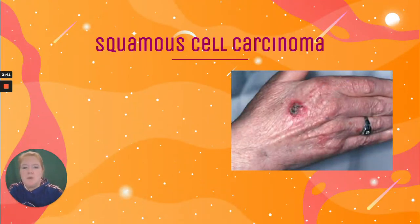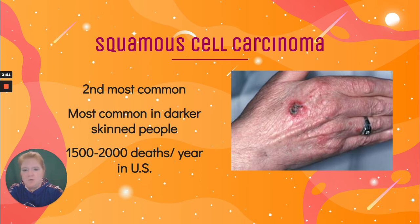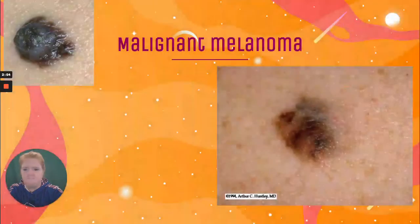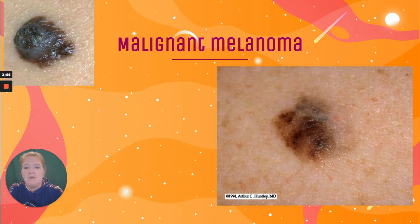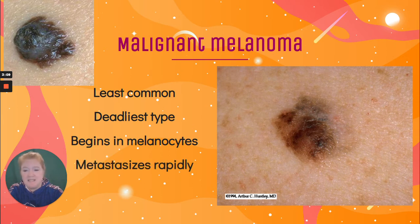Then there's squamous cell carcinoma, the second most common type of skin cancer. It's more common in darker-skinned people and results in about 1,500 to 2,000 deaths every year in the United States. And then we have malignant melanoma — the least common but the deadliest type. It begins in the melanocytes, hence melanoma, and it metastasizes rapidly, making it the more serious type of skin cancer.